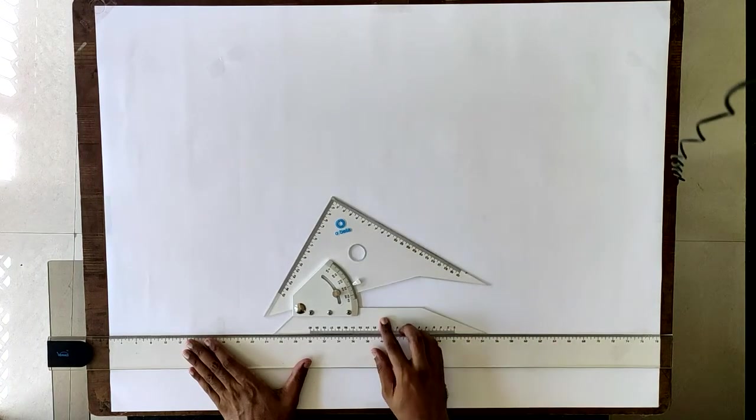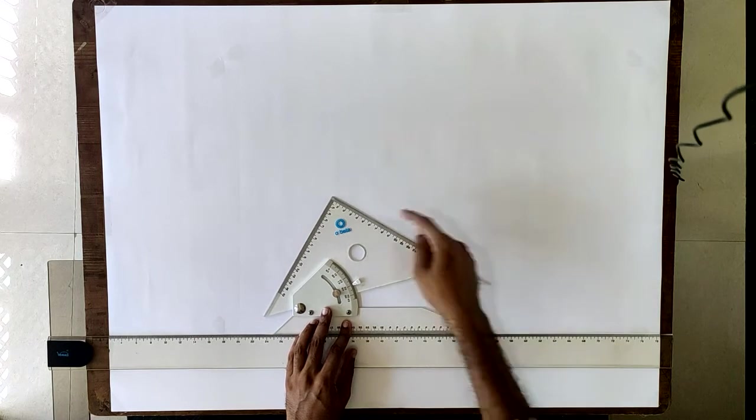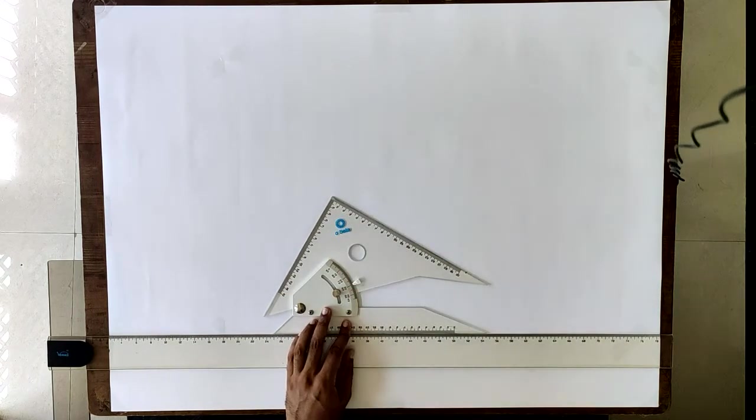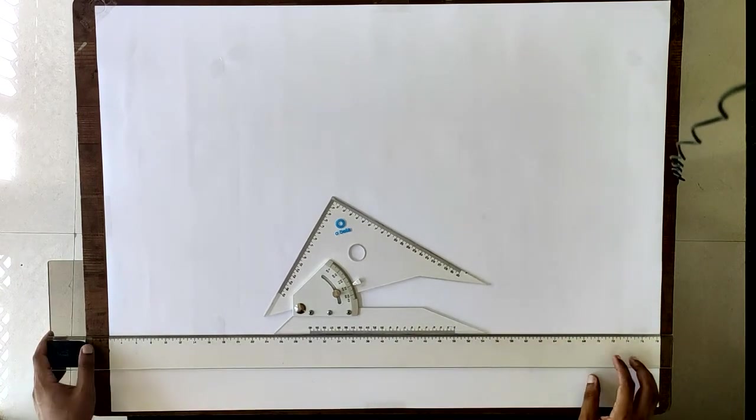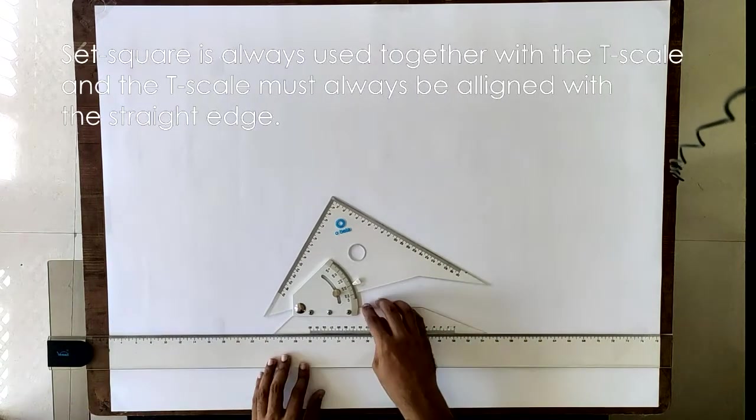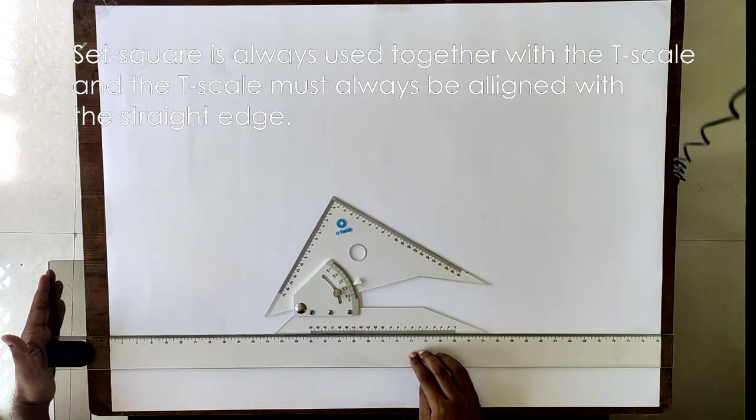Place it back to the T-scale. If you draw a line here that will be 30 degrees, if you draw a line here that is going to be 60 degrees. That is how you use an adjustable set square. Always keep in mind that the base edge should be aligned with the T-scale.